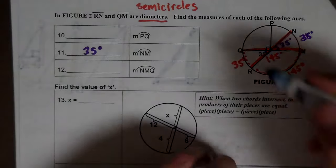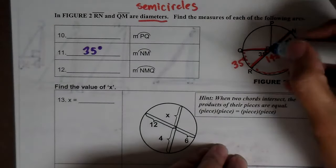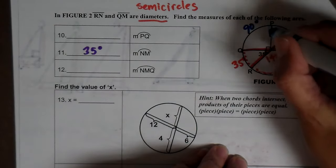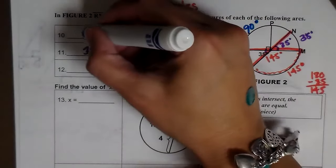And then, oops, that's 35. This is 90, so this is 90. So PQ is 90 degrees.